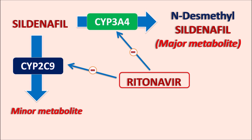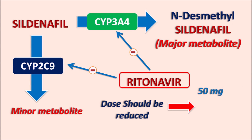That's why whenever ritonavir is co-administered with sildenafil, the dose of sildenafil should be reduced. Normally sildenafil is given at a dose of 50 mg for erectile dysfunction, but when taken with ritonavir the dose should be reduced to 25 mg — the maximum dose is 25 mg per 48 hours. If the dose is not reduced, it may result in significant side effects like severe hypotension, dizziness, and flushing in patients.